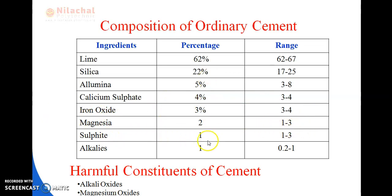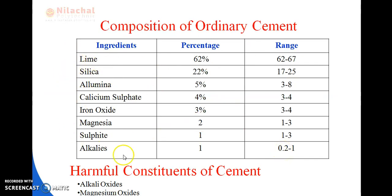Sulfide has a percentage of 1% with a range of 1–3%. Alkalis contain 1% in cement with a range of 0.2–1%. These are the ingredients of the cement and their percentages contained in the cement. If we add all these up, we get 100%.